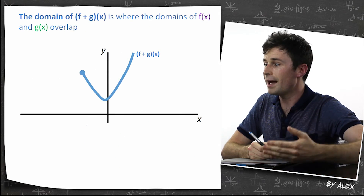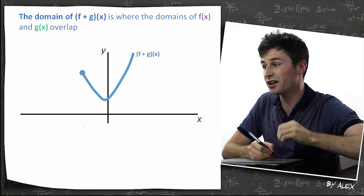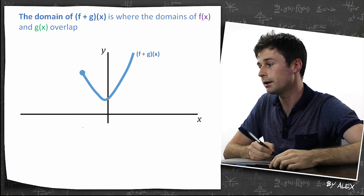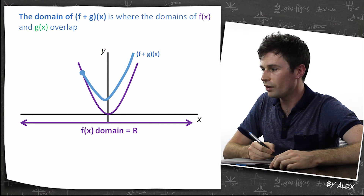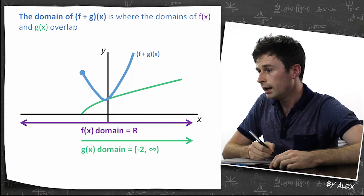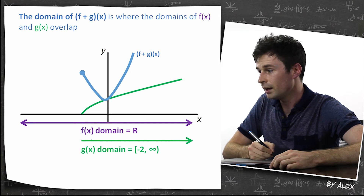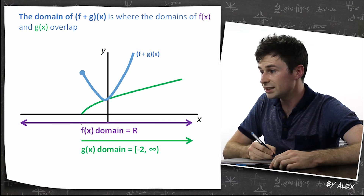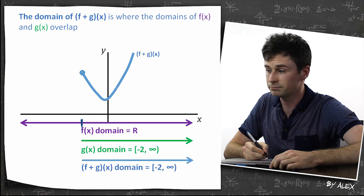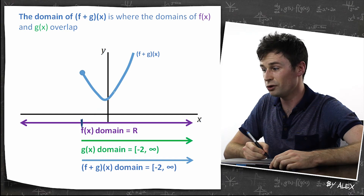The domain of f plus g of x is where the domains of f of x and g of x actually overlap. The domain of f of x is all real numbers, and the domain of g of x is negative two to infinity. We just need to find where both overlap, which is from negative two to infinity. So the domain of f plus g of x is negative two to infinity.